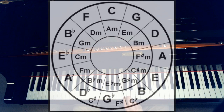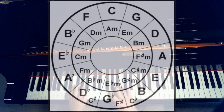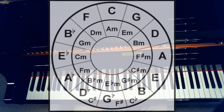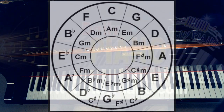A whole step always skips a key, and a half step skips nothing. For example, with three flats you'd normally know you're in the key of E flat. But if it sounds minor, it might be in the key of C minor. To find the relative minor of any major key, simply go down a step and a half — that is its relative minor.